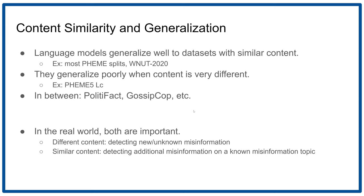In the real world, both of these things are important. The different-content setting is important for detecting new and unknown misinformation. But similar content is also really important, because you may already know about some sort of misinformation or conspiracy theory, but you'd still like to flag new tweets about it.